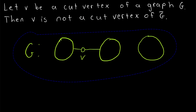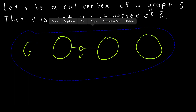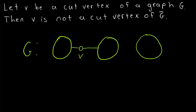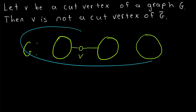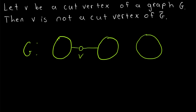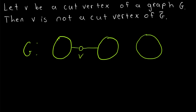Here is a diagram that will help us through the proof. One quick thing to point out is that in this result, it does not have to be the case that G is connected — we're not assuming that. So it's possible that G looks like this, already disconnected, but if we delete V, that disconnects the component that V belongs to.